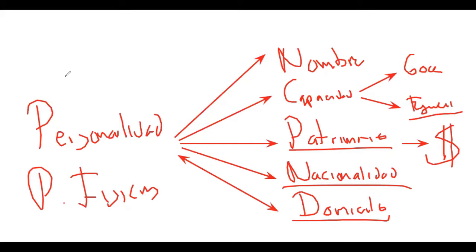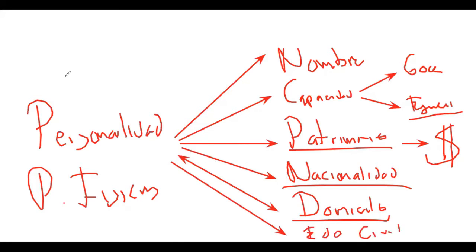Por último tenemos el Estado Civil. No se limiten a pensar que el estado de las personas es casado o soltero; hay muchas más cuestiones. También es Estado Civil el vínculo que tengo con mis hijos, que se llama patria potestad, y de mis hijos hacia mí sería la filiación. El que tengo con mi esposa sería el derivado del matrimonio, con una concubina el del concubinato, y con un hijo adoptado el de la adopción. Hay distintos temas que versan sobre el Estado Civil.